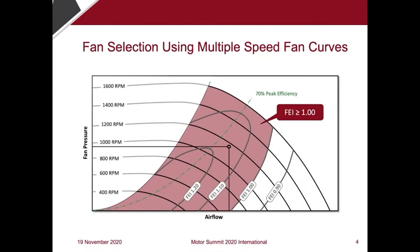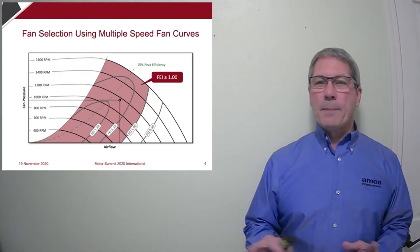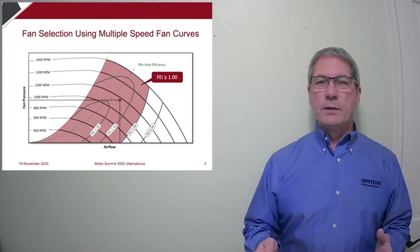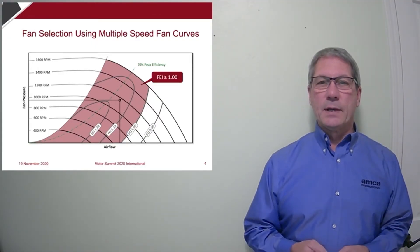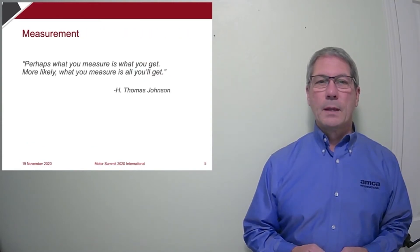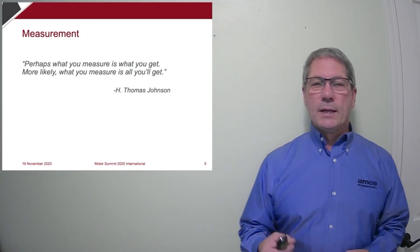But what makes FEI unique from other energy efficiency metrics is that it can be calculated at any duty point. Any airflow and pressure point within the fan's operating range. It's not just a single metric applied to a fan model. So if the fan is available at multiple speeds like this one, there's a whole map of FEI values shown here as lines of constant FEI.